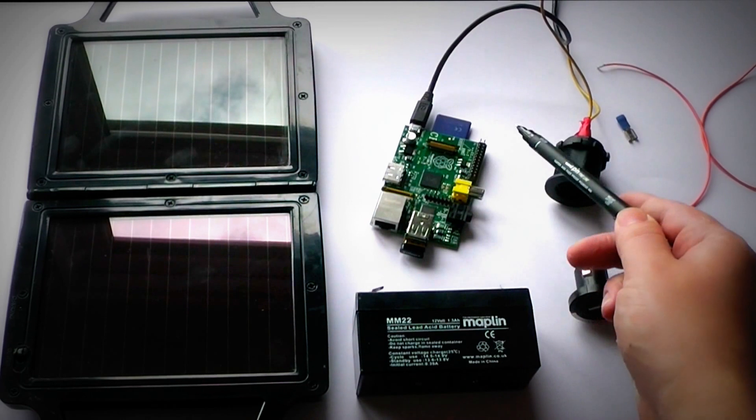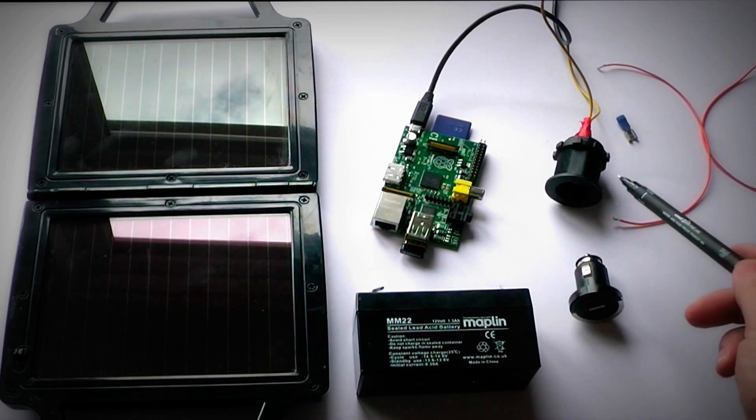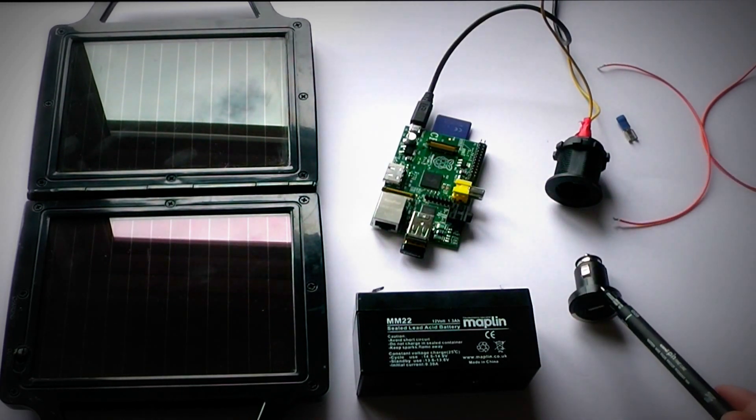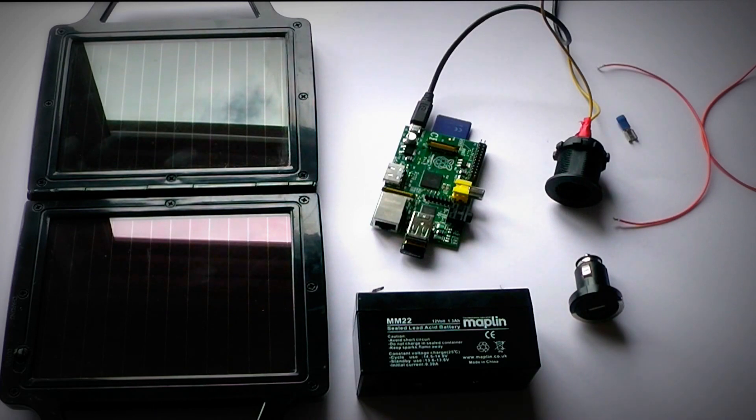So what do we need? A solar panel, a Raspberry Pi, a battery, a car power adapter, and a USB in-car charger.